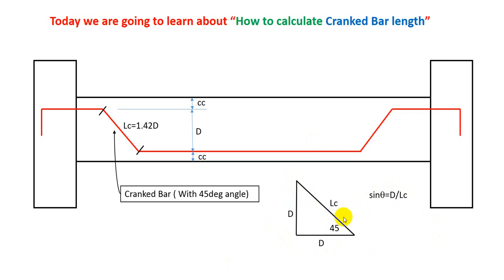We all know that sin(θ) = D/LC, meaning the height divided by the inclined line. If we modify that, LC = D/sin(θ). Now if we input the value, LC = D/sin(45°).